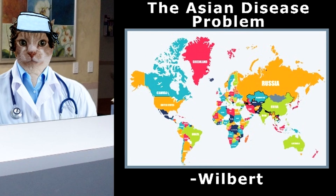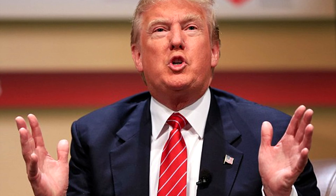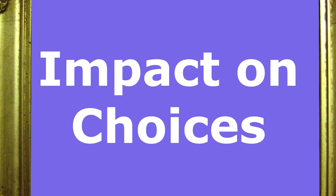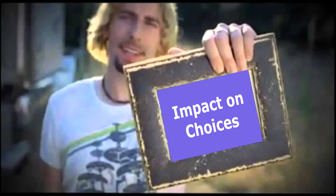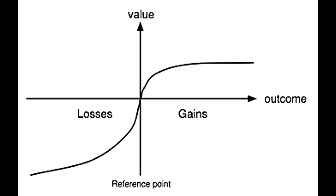By studying the Asian disease problem and the works of Kahneman and Tversky, we should learn at least one thing: the way we frame things can have a profound impact on the way decisions are made. The way a question is framed has a significant impact on the answers that will ensue. If we want individuals to be risk-taking, talk in terms of losses like deaths; and if we want someone to be risk-averse, talk in terms of gains like lives saved.